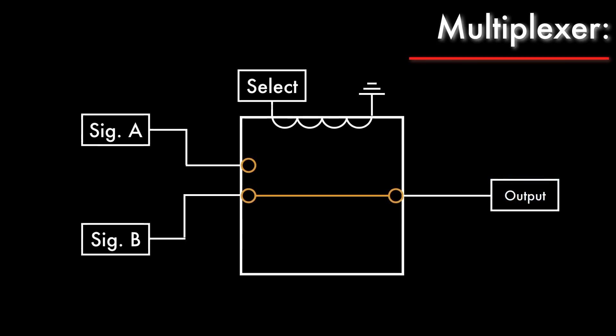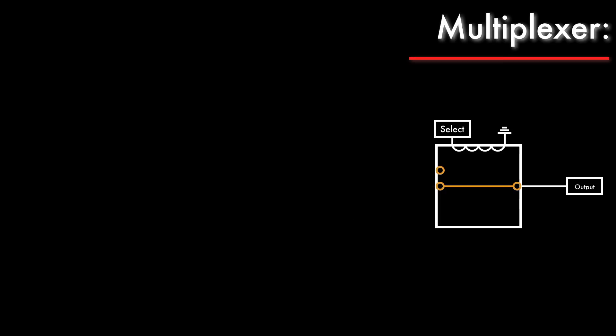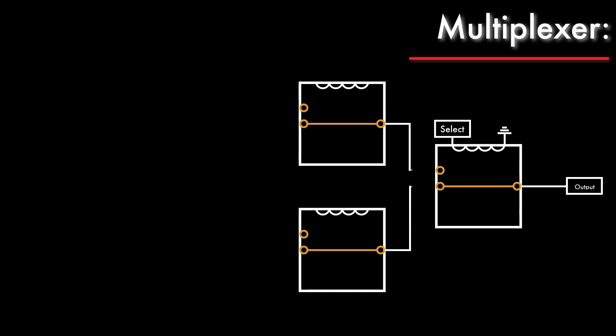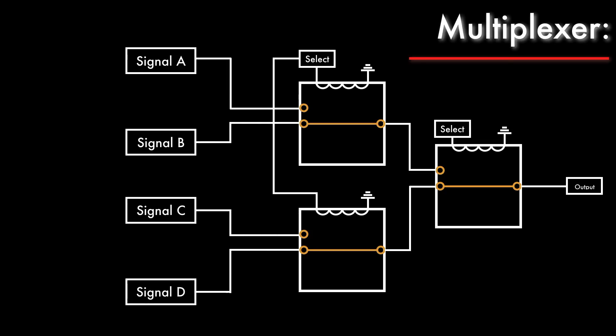We can use this 2-to-1 multiplexer as a basic unit to construct more complicated multiplexers. By adding two more relays, connecting their armatures to the input terminals on the first relay, and connecting their coils in parallel to another selection signal, two select bits give us four possible combinations, allowing us to select one of four inputs — making a 4-to-1 multiplexer.